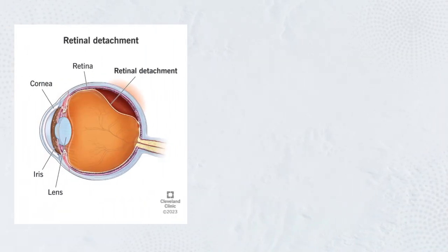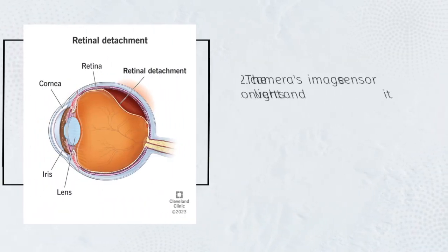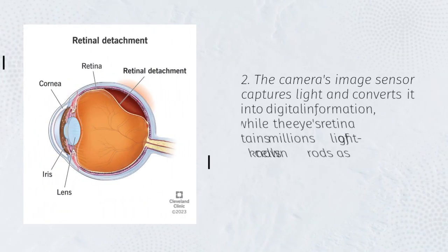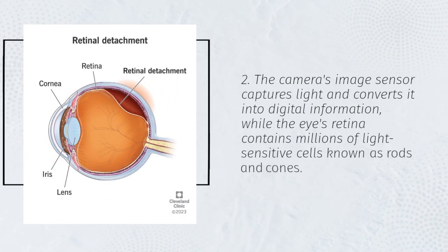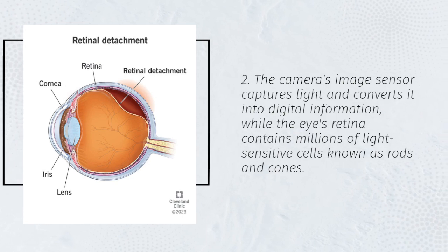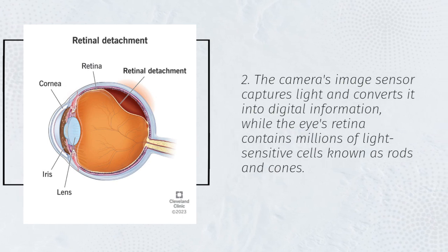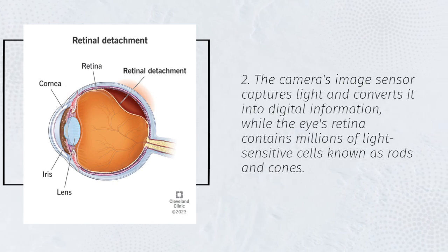The camera's image sensor captures light and converts it into digital information, while the eye's retina contains millions of light-sensitive cells known as rods and cones.